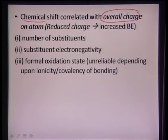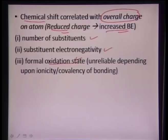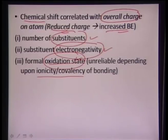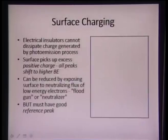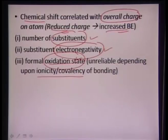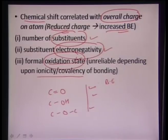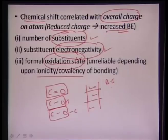Chemical shift is correlated with the overall charge of an atom: reduced charge gives increased binding energy. It depends on number of substituents, substituent electronegativity, and oxidation state — though ionicity versus covalence can make it a little unreliable. Different C–O bonding configurations such as C=O, C–OH, and C–O–C will also show marginally different binding energies even though all involve carbon bonded to oxygen.